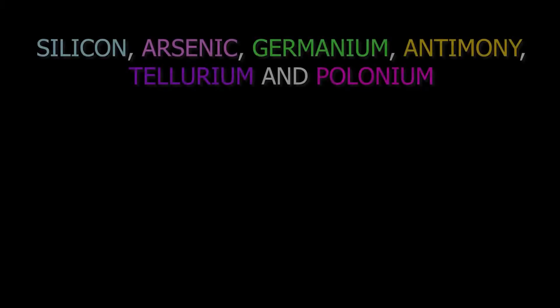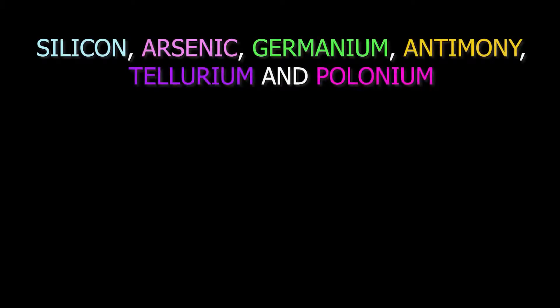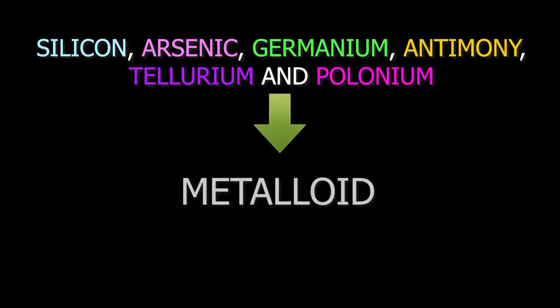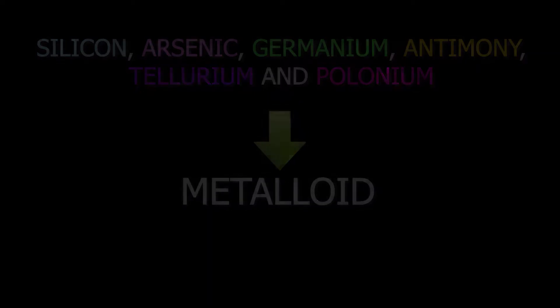Silicon, arsenic, germanium, antimony, tellurium, and polonium are other elements which are metalloids. Let's see a few properties of metalloids.